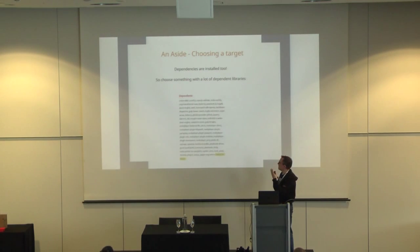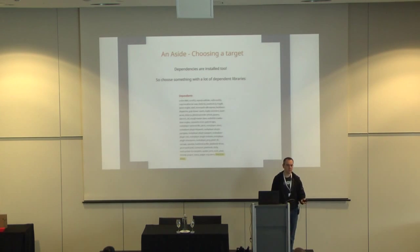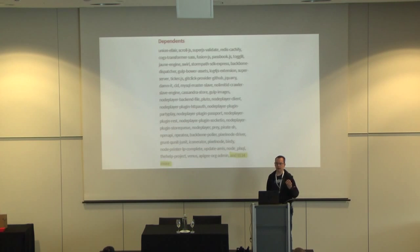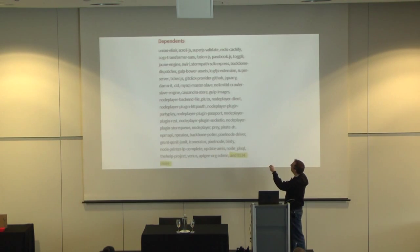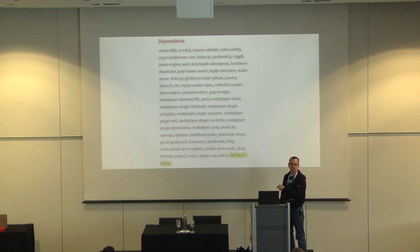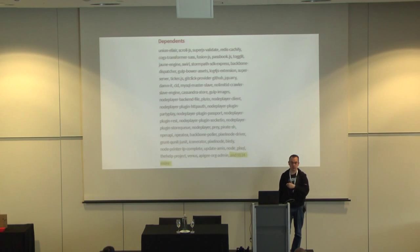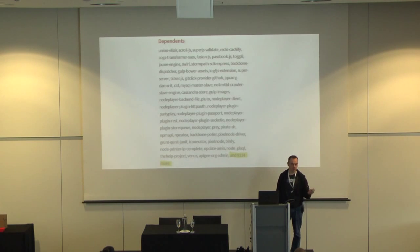Choosing a target: it doesn't have to be the package someone actually installs — it could be a dependency. npm actually gives you a really useful view of dependent libraries. Here's one well-used package, and at the bottom: 9,114 more packages which depend on it. So if you can compromise this one package, you can affect everyone who installs those 9,100-plus packages. An excellent way to pick targets.